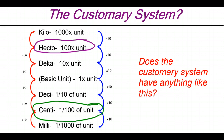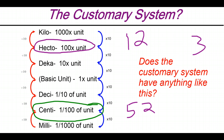We have 12 inches in a foot, which is not 10. We have 3 feet in a yard, and 5,280 feet in a mile. That is just in our units of length. Each different type of unit — length, capacity, and weight — in the customary system has different rules in terms of converting it, so we really don't have a system quite like the metric system.